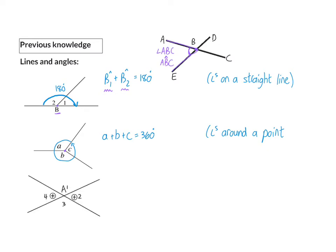Our next theorem forms when we have two straight lines intersecting. At that point of intersection, the two vertically opposite angles are the same size. So I can say angle A4 is equal to angle A2, and angle A1 is equal to angle A3. My reason for that: vertically opposite angles.